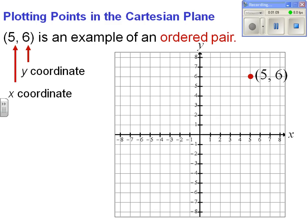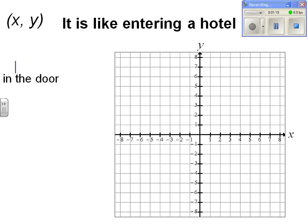Let's look at how an ordered pair is used and how it is plotted on a Cartesian plane. It's like entering a hotel. The x-coordinate is like moving on the horizontal plane towards the door and the y-coordinate is like moving up and down the elevator.